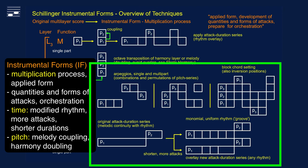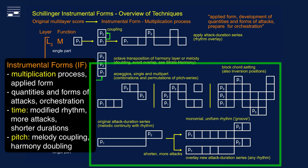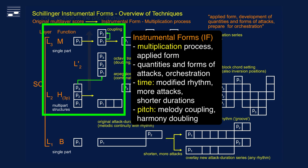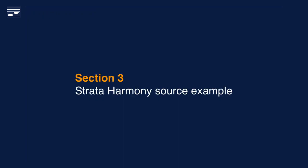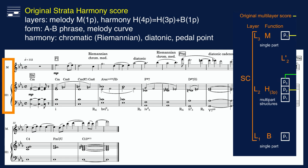You'll meet the various techniques in a moment, but in general, through the creation of instrumental forms we obtain more attacks with shorter durations. We may add more parts to an existing score through melody coupling or harmony layer doubling. I'll use a single, carefully constructed, strata harmony example as the source for instrumental forms.